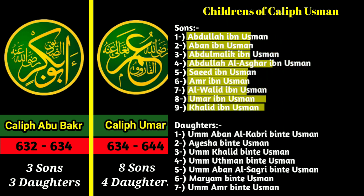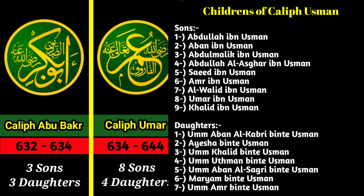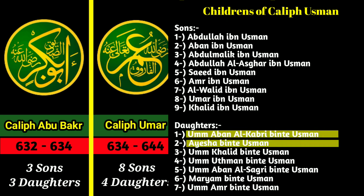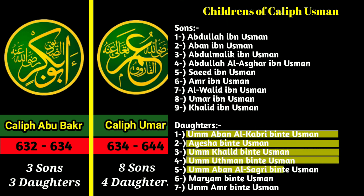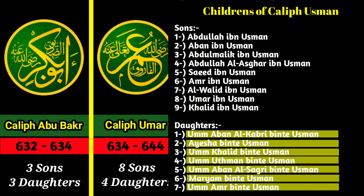And his daughters' names were: Um-Aban al-Kabri binti Uthman, Aisha binti Uthman, Um-Khalid binti Uthman, Um-Uthman binti Uthman, Um-Aban al-Sagri binti Uthman, Maryam binti Uthman, and Um-Amar binti Uthman.